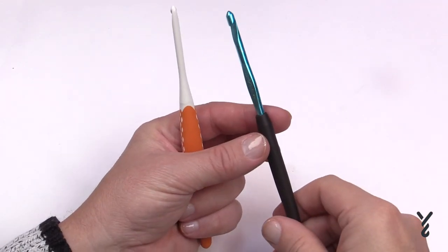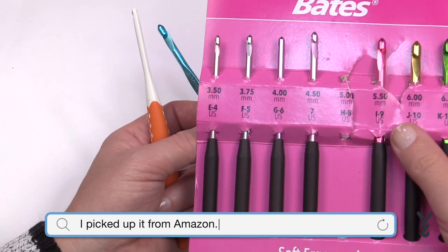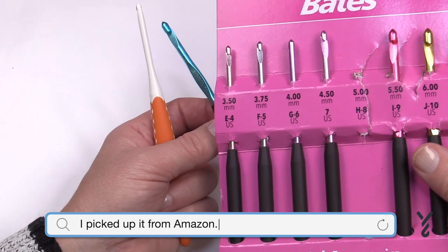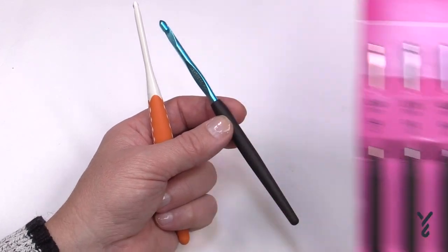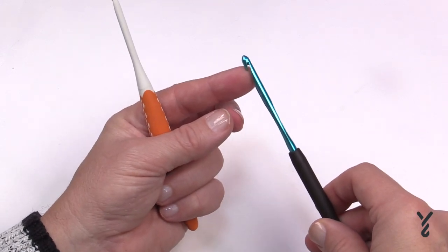The next hook that I got was a Susan Bates Soft Ergonomic, and it comes in a package just like you see here, and I'm really impressed with these particular hooks. These are the inline, the way that they're cut here at the very tip.